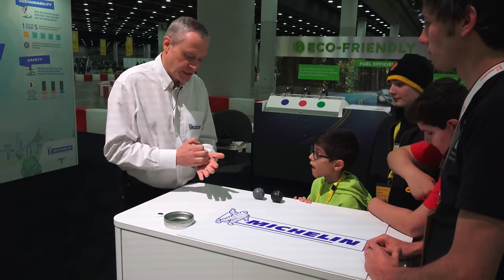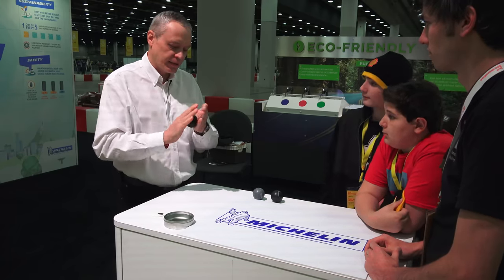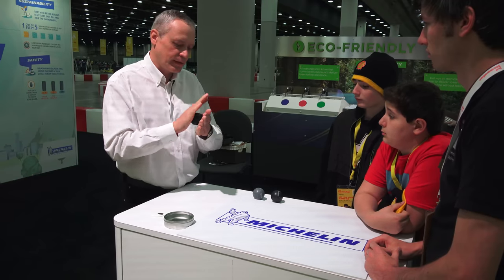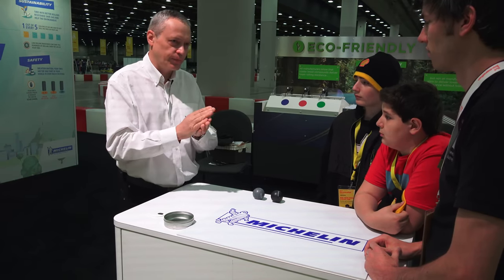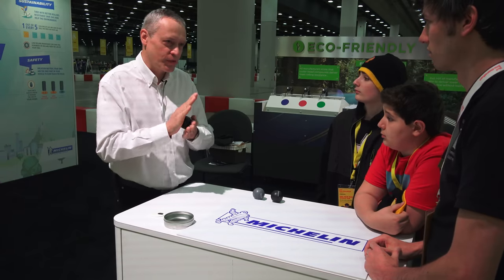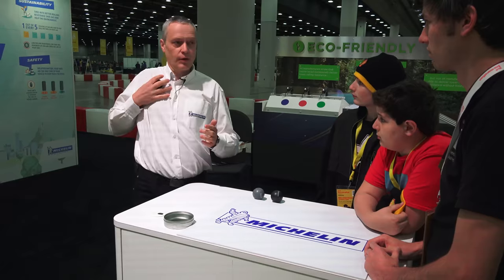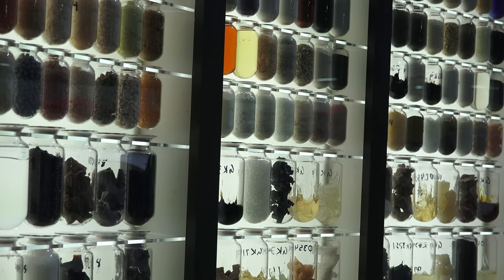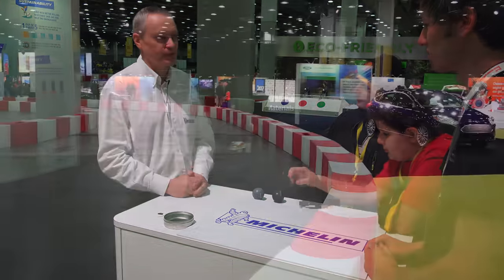And just to finish with this very interesting compound, you see that, as I've explained, when I apply a very slow deformation, it deforms. Whereas when I want to use very high speed deformation, for example, trying to make it bounce, well, it's bouncing. That's why, thanks to cutting edge technologies, we're able to manage both grip and rolling resistance.